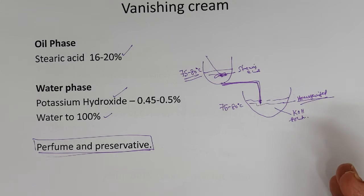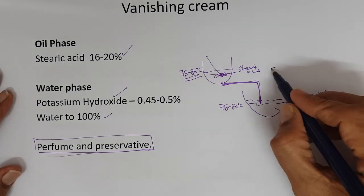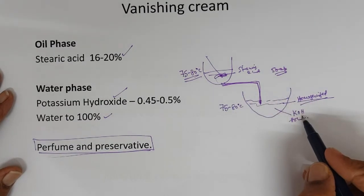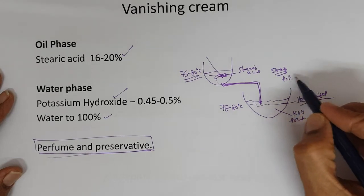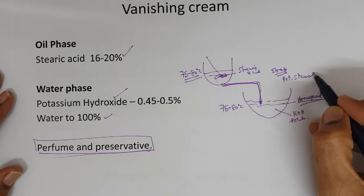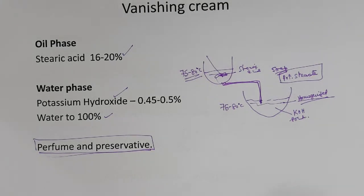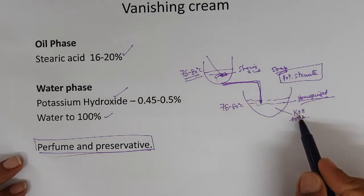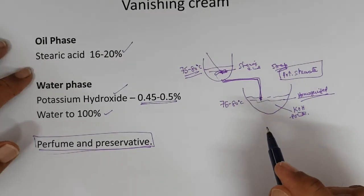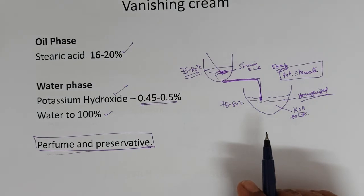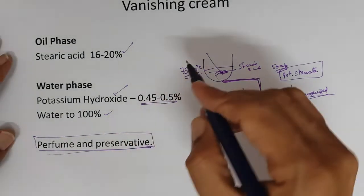What is the emulsifier for the cream? The emulsifier for the cream is soap. Stearic acid reacts with potassium hydroxide to form potassium stearate. Potassium stearate is formed in situ while the emulsion is formed. That's what we discussed in the previous thing - some emulsifiers are formed in situ.